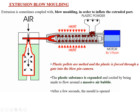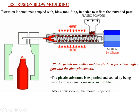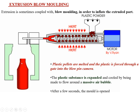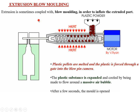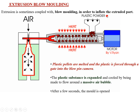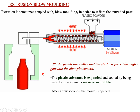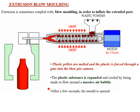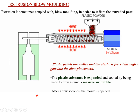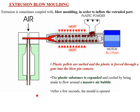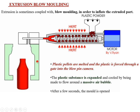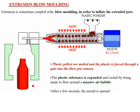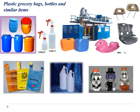Extrusion blow molding is exclusively used for preparing shapes like bottles. Once the plastic is extruded, you blow air into it and use a separate mold — the extruded part is inflated. Because of the air pressure and the outside shape of the mold, the plastic expands, and on cooling you get the particular shape. These are some articles prepared by extrusion molding.